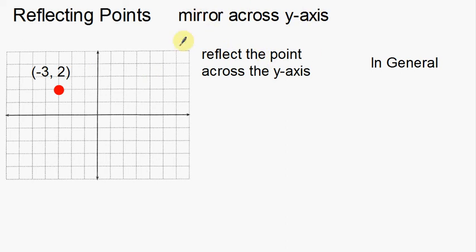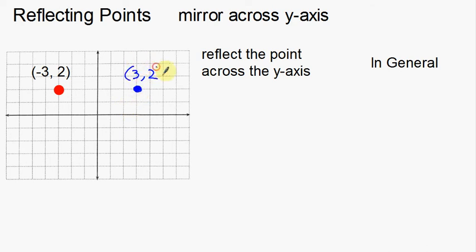Now, what about reflecting points across the y-axis — mirroring across the y-axis? Some of the rules are going to stay the same. I have this point, which is one, two, three units away from the y-axis. When I take this point and reflect it, it's also going to be one, two, three units away from the y-axis. So here's where my new point is going to be, with coordinates three, two. The distance from the axis is always going to be the same between the two points.